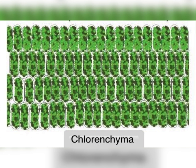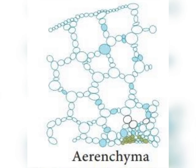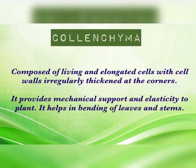Chlorenchyma is a modification of parenchyma in which chlorophyll is present. Another modification is aerenchyma, where there is a huge space among the cells. This is responsible for providing buoyancy to aquatic plants or hydrophytes, making them light. These gaps provide the buoyancy to them.